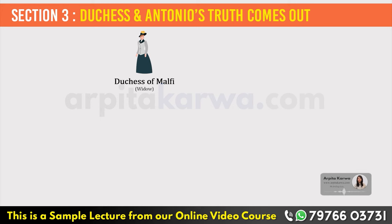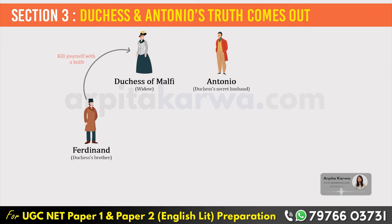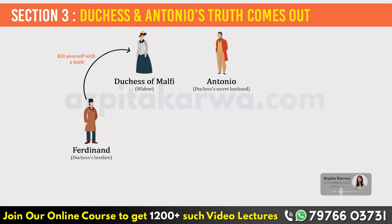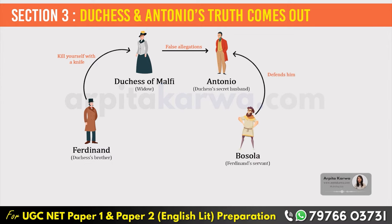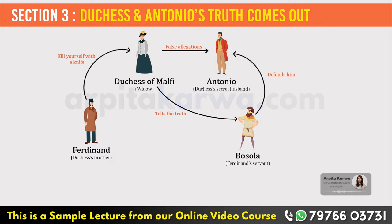After some years, the Duchess gives birth to two more children of Antonio. Ferdinand secretly goes inside the Duchess's bedroom and gives her a knife, asking her to kill herself. The Duchess tells him she is married, and Ferdinand is extremely unhappy — he says she has ruined herself and the family's reputation, and pledges never to see his sister again. The Duchess and Antonio plan to run away together. The Duchess puts a false allegation on Antonio so he can leave the palace. However, in the court, Bosola defends Antonio, making the Duchess believe Bosola is trustworthy. She tells him the truth about herself and Antonio, but Bosola, as Ferdinand's spy, sends this news to Cardinal and Ferdinand in Rome.